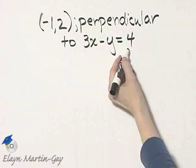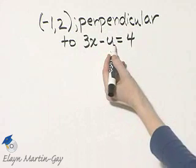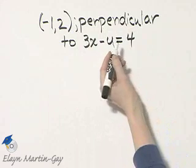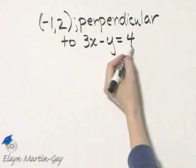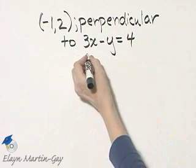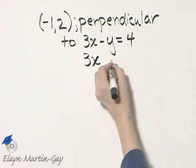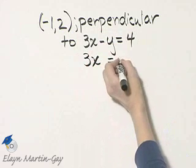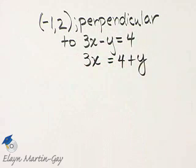Many ways of finding the slope, I'll find the slope by solving this equation for y. Now, since I'm solving for y, I think I'll add y to both sides. If I take this equation and add y to the left side, I have 3x is equal to, if I add y to the right side, 4 plus y.